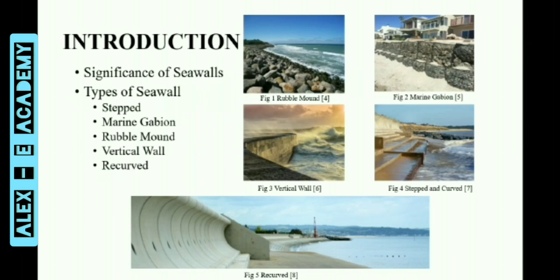A sea wall is a form of coastal defense constructed where the sea meets the shoreline. The purpose of a sea wall is to protect areas of human habitation, conservation and leisure activities from the tides, waves or tsunamis. A sea wall works by reflecting incident wave energy back into the sea, thus reducing the energy available to cause erosion.